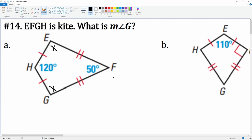We can set up the equation: 120 plus 50 plus x plus x has to equal 360. That's the total angles inside a kite. This becomes 170 plus 2x after we combine like terms.